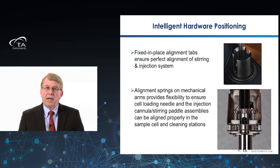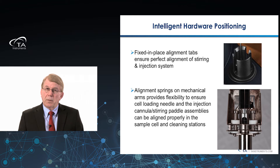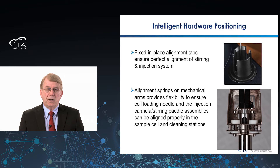Intelligent hardware positioning ensures that as you use an automated system, if it varies a little because of wear or other mechanical factors and is off by just a little, you're not going to damage your instrumentation. Fixed-in-place alignment tabs ensure perfect alignment of the injection system or cell loading system exactly in the cell or washing station. Alignment springs embedded in the mechanical arms allow small adjustments without damaging the hardware. Intelligent hardware positioning ensures the reliability of the mechanical arms as they move time after time under heavy use.